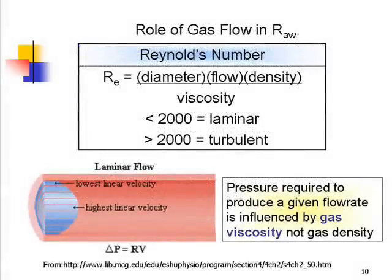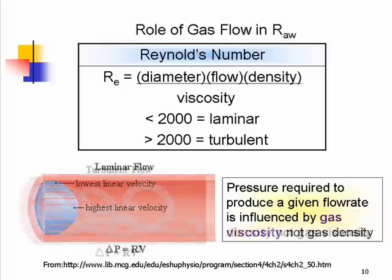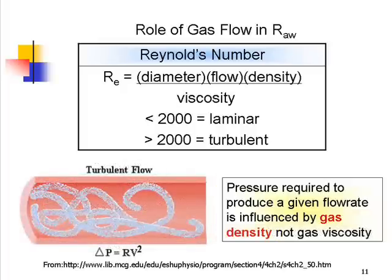Comparing the pressure required to produce a given flow rate, laminar flow is affected more by gas viscosity than gas density. The opposite is true for turbulent flow — for Reynolds numbers greater than two thousand, the pressure required to produce a given flow rate is influenced by gas density, not gas viscosity.